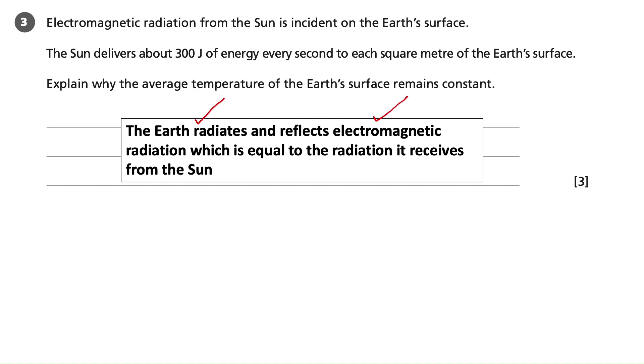Now, the third mark is the idea about why the temperature remains constant. And that is because this radiation has got to be equal to the radiation it receives from the sun. Clearly, if it was receiving more radiation from the sun than it was able to radiate and reflect, the Earth's temperature would go up. It doesn't. It remains constant. So therefore, we could be confident that the Earth radiates and reflects the electromagnetic radiation which is equal to that it receives from the sun.